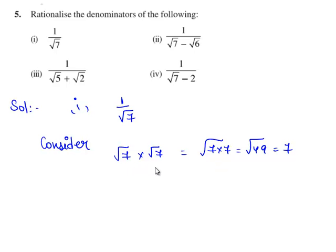Therefore when root 7 is multiplied with itself we obtain a rational number. So we multiply 1 by root 7 with root 7 on both the numerator and denominator. Therefore we have 1 times root 7 is root 7, by root 7 times root 7 is 7.